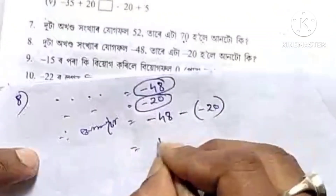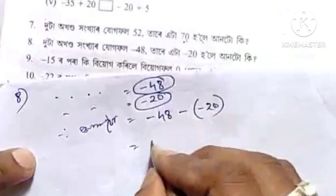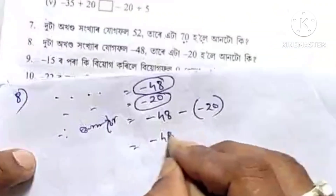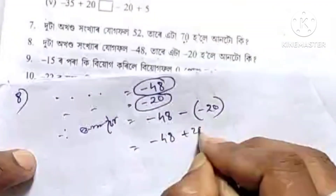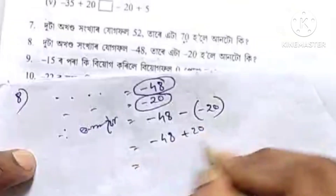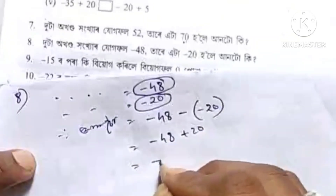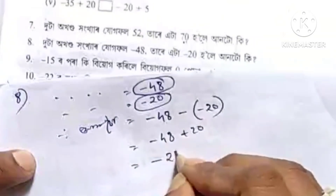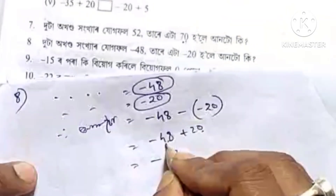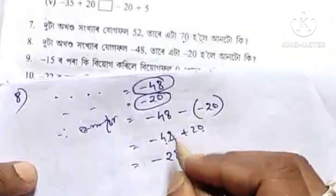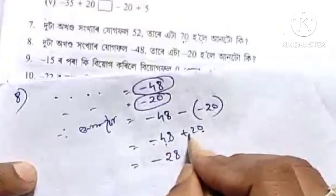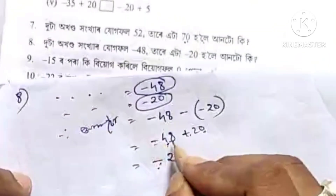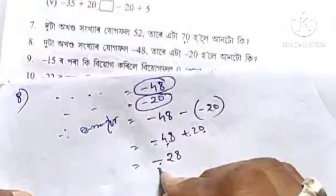So minus 48 plus 20 gives minus 28. This is minus because the larger sin is larger and negative. So this gives minus.